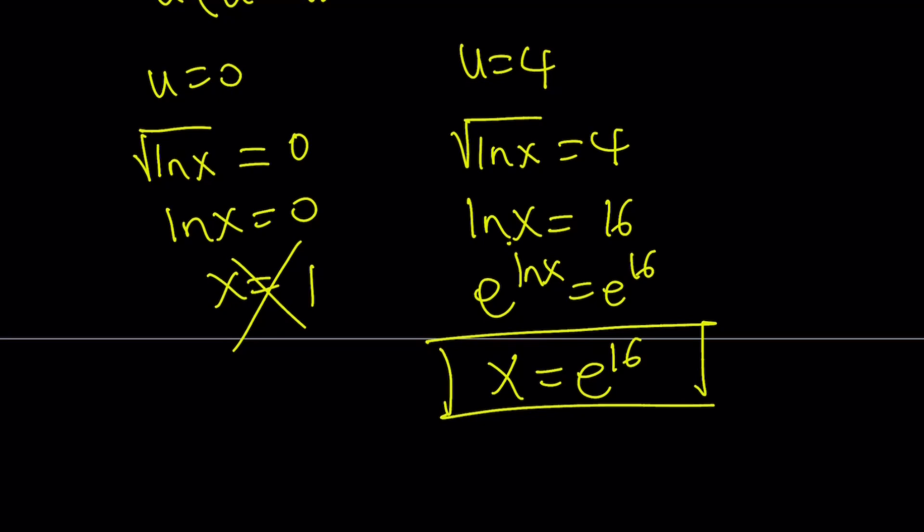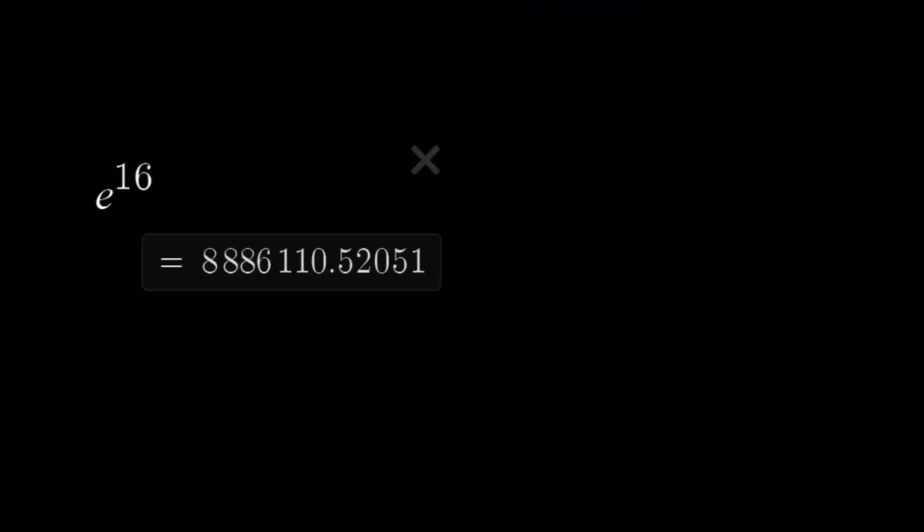And if you plug it in, you're going to see that it works. It's valid and all good. Now let's go ahead and take a look at the numerical value of e to the power of 16. And we're just going to wrap it up. And here's a value for e to the power of 16. It's a very large number, obviously. It's about 8,886,110.52051, and so on and so forth. It only gives you so many digits, but that's pretty much it.